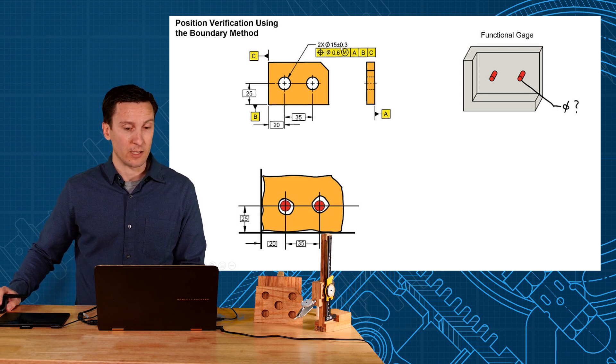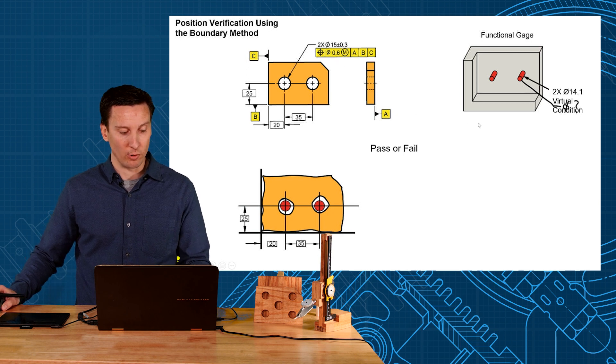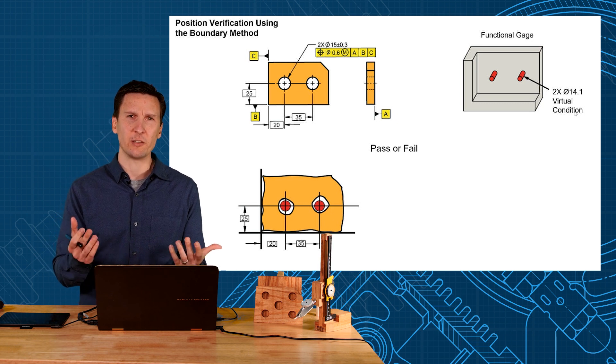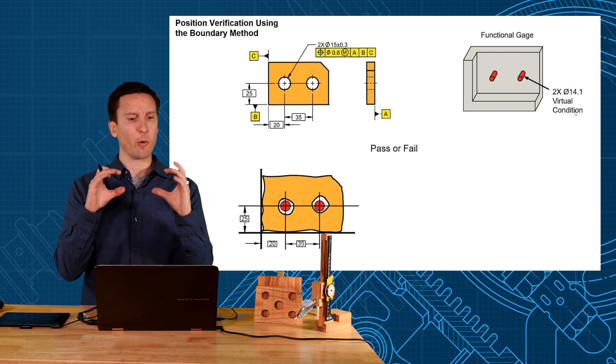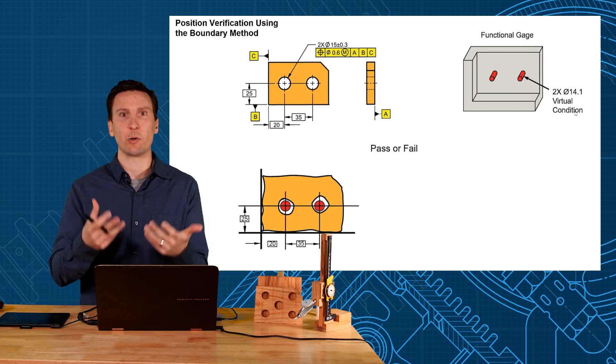Smallest hole 14.7, that's MMC, minus the position tolerance of 0.6, gives you a 14.1 virtual condition. And that's what size you would make the pins. And that makes sense. If you check the hole with a 0.6 under pin, then you're checking to see if it's in position within 0.6.